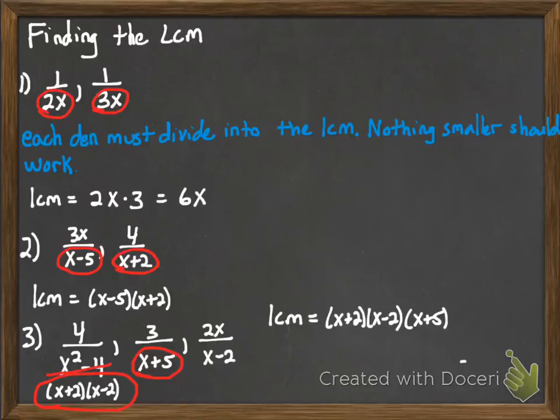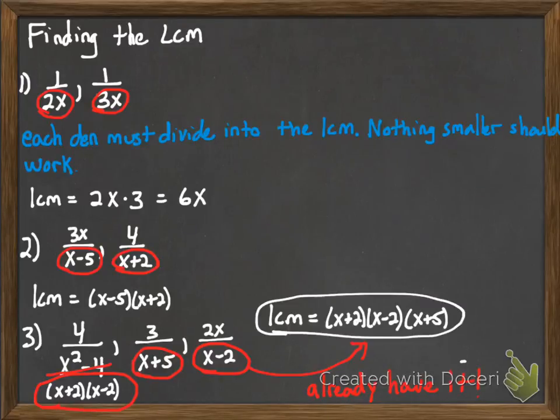And then we come finally to our last denominator, x minus 2. And when we examine that with what we already have, we say to ourselves, hey, wait a minute, we already have x minus 2 accounted for. The common denominator I have written down right now will already take care of x minus 2. So because we already have it, we're not going to include it as part of our common denominator. And so actually we now have our common denominator.